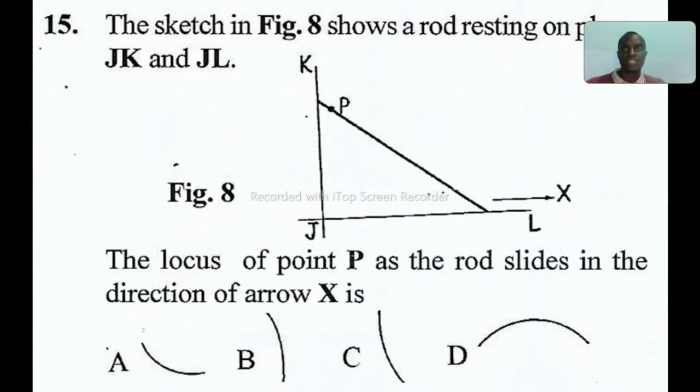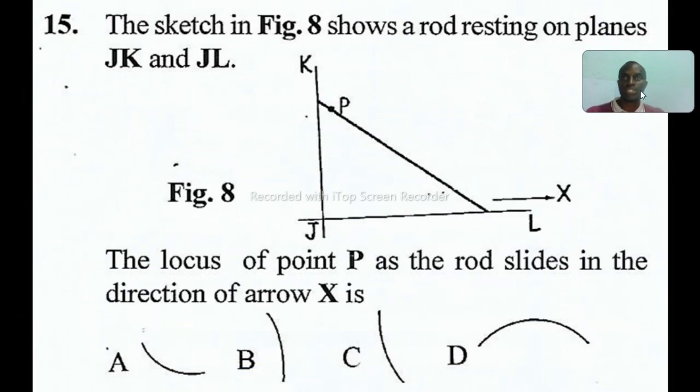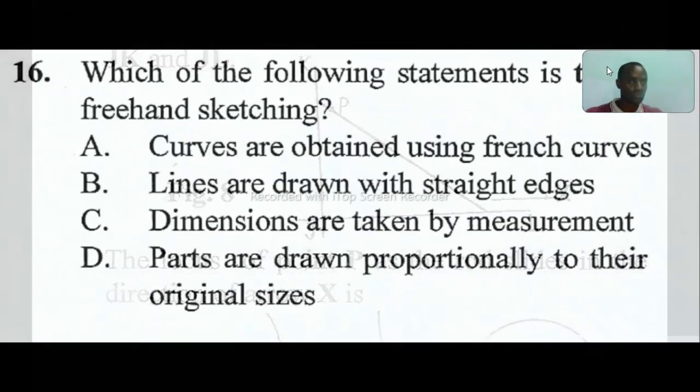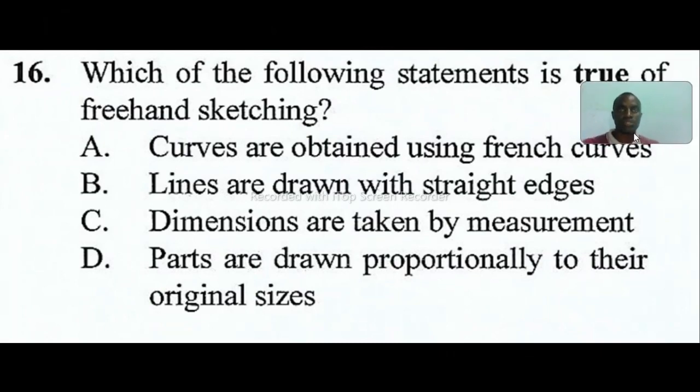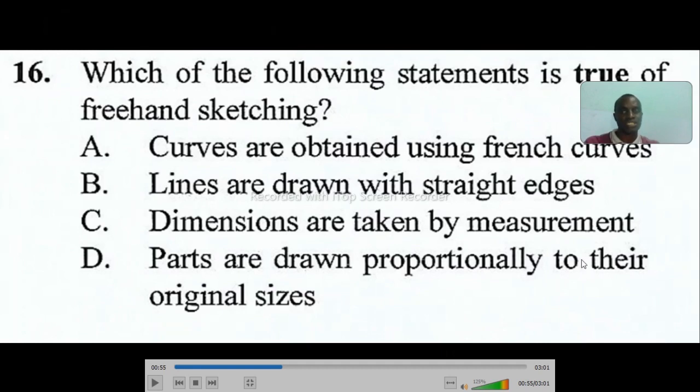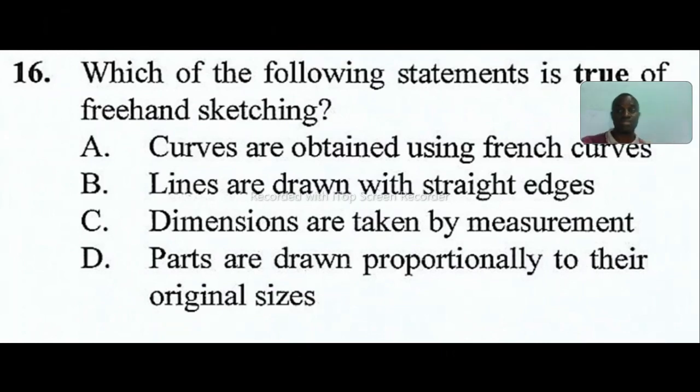Question fifteen: the sketch in figure eight shows a rod resting on planes JK and JL. The locus of the point P as the rod slides in direction X will be C. Question sixteen: which of the following statements is true of freehand sketch? The answer is D. Parts are drawn proportionally to their original size. They cannot be exact, they will be proportional to the original size.